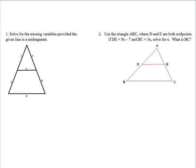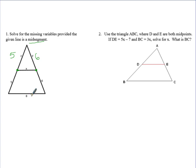Now let's look at some example problems. Solve for the variables given that the line is a mid-segment. Mid-segment means we're connecting two midpoints. So if one half of a side is 5, then Z is also 5. If the other half is 6, then Y is 6. And since the mid-segment is half the length of the parallel side, if that side is 8, then X is 4.